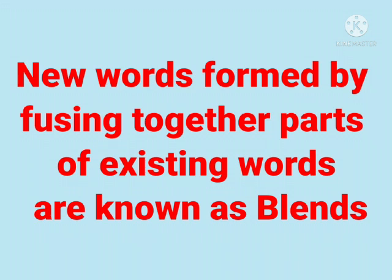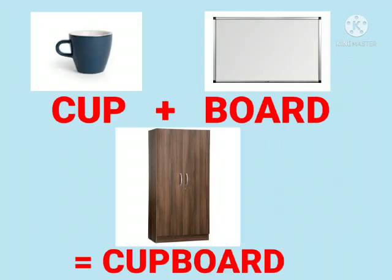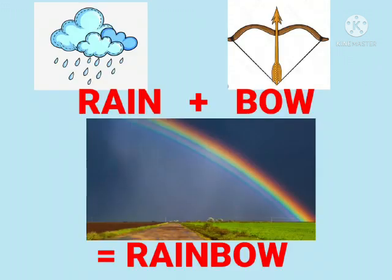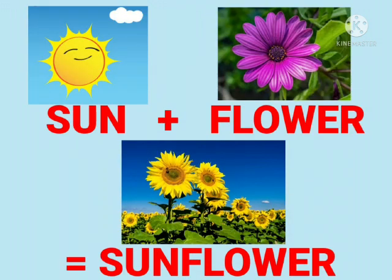It is fun to join two different words and get a new word. Cup plus board — which word will we get? Cupboard. Rain plus bow — which word will we get, children? Rainbow. Sun plus flower is equal to sunflower.